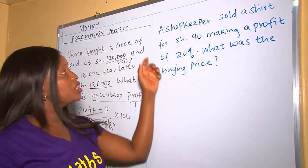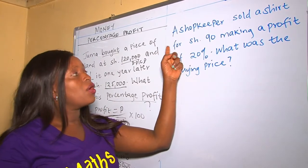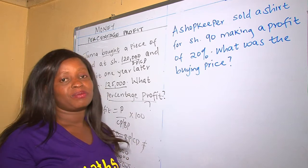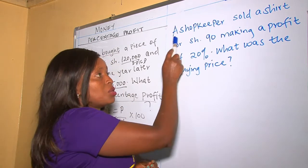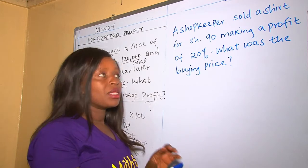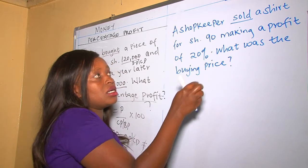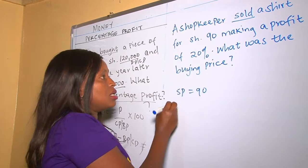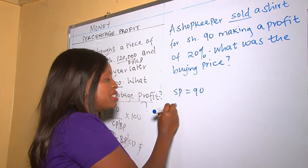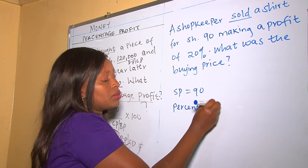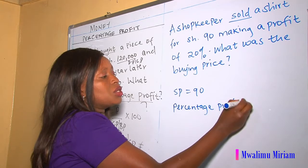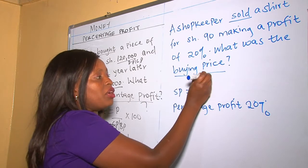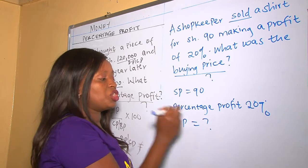In this question, a shopkeeper sold a shirt for 90 shillings, making a profit of 20%. What was the buying price? Reading through and analyzing: we are given the selling price of 90 shillings, the percentage profit is 20%, and we are being asked to find the buying price.